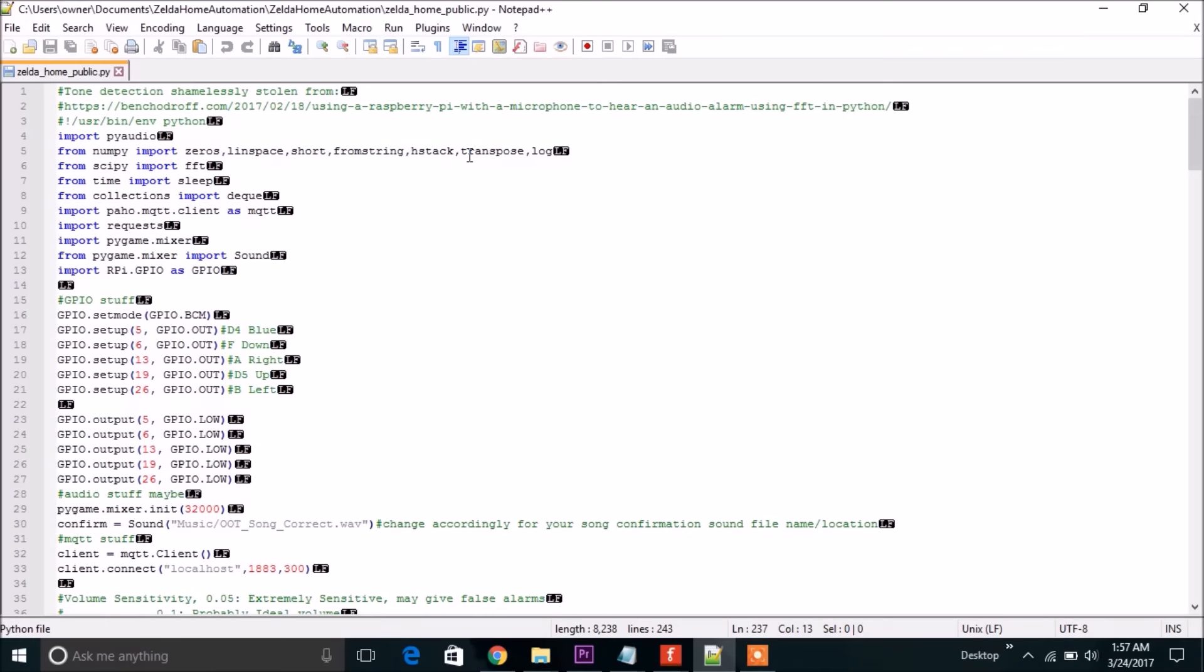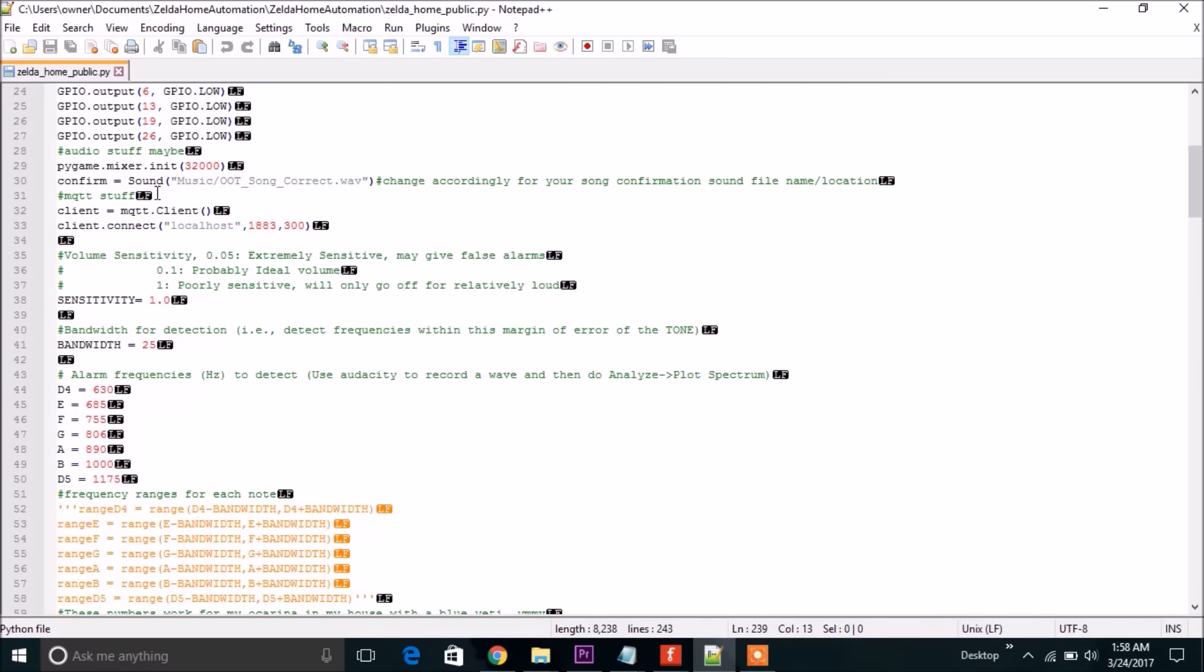This is the Python code. I was having a lot of trouble writing my own Fast Fourier Transform stuff so I stole everything from here. Make sure you check it out. You want to make sure that this here is the whatever directory your confirmation sound is.